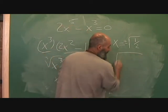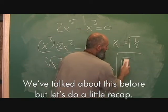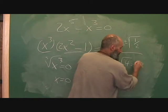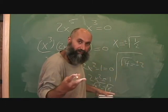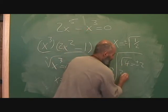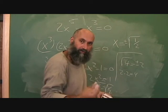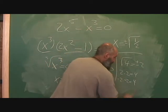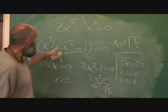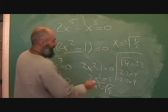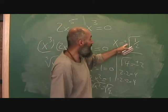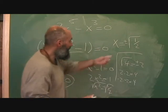Think about it: the square root of 4 — it's not just 2, it's plus or minus 2. Square root means you need two identical things multiplied to give you that number. Two times two gives you 4, but negative two times negative two also gives you 4. So square root of 4 is both 2 and negative 2 — it always has two solutions. For this question, we have three solutions: x equals zero, x equals positive square root of one half, and x equals negative square root of one half.